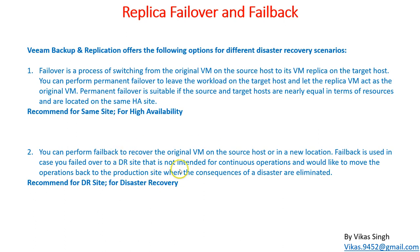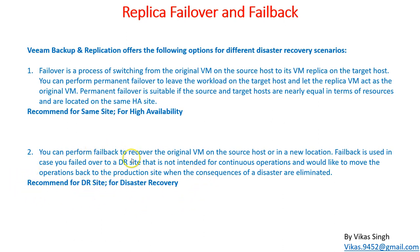When something goes wrong with your primary site and you want to switch your whole infrastructure to the disaster recovery site, you can then restore your virtual machines from the DR site back to the primary site once the consequences are overcome. So failback is recommended for the DR site as part of a disaster recovery plan, while failover is recommended for the same site for high availability.